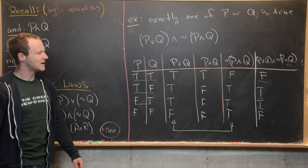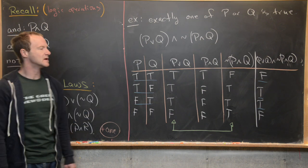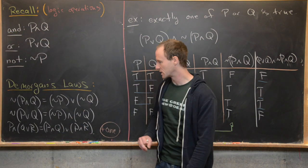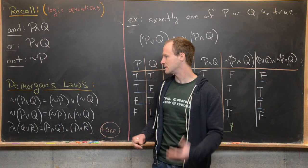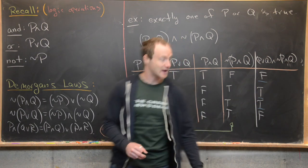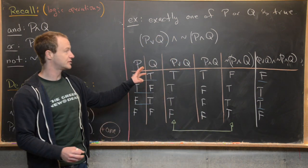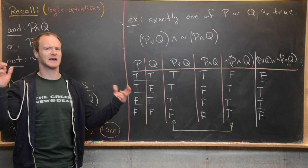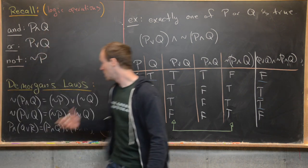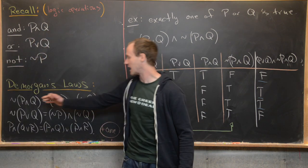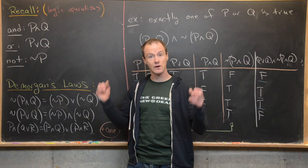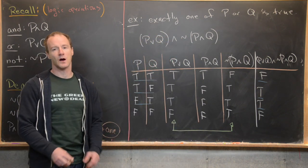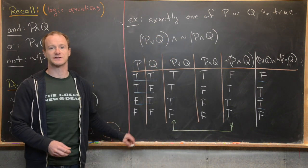We'll stop here, because checking things like DeMorgan's laws really comes down to setting up a truth table just like this one, computing both sides of the equivalence, and confirming you get the same outcome. That's a good place to stop — good luck.